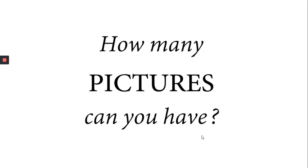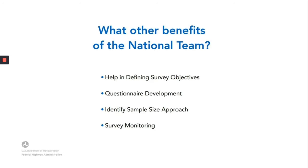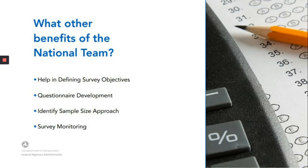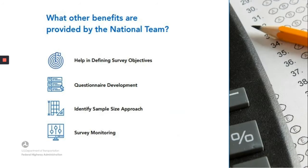Now, here's the question: how many pictures can you have on one slide? You can have one picture for the header and one picture for each of the bullet points, as long as you don't have more than six. Suppose you have a slide like this with four bullet points — you can use a big image which makes the slide look better, or you can use four smaller pictures to illustrate bullets, or if you wish, you can use both photographs and the four icons.